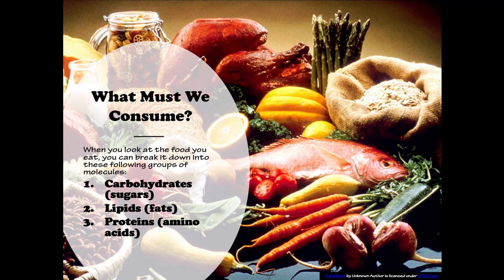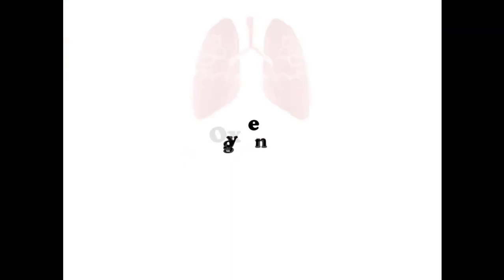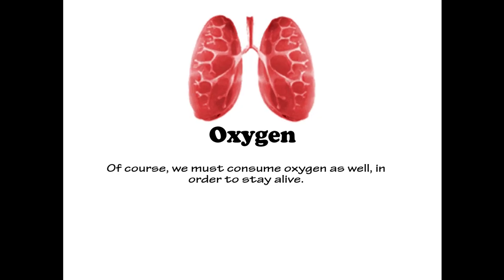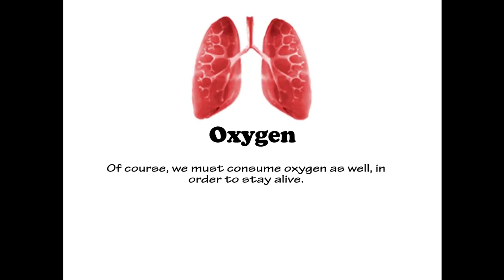What must we consume? When you look at the food you eat, you can break it all down into the following groups of molecules: carbohydrates or sugars, lipids or fats, and proteins or amino acids. And of course we can't forget oxygen — we must consume oxygen as well in order to stay alive.